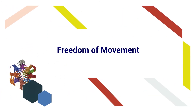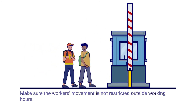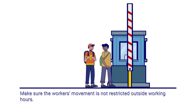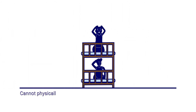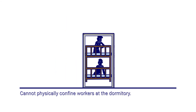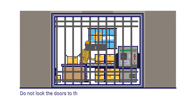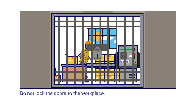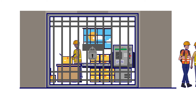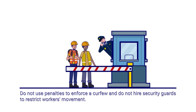Freedom of movement. If accommodation is provided, make sure the workers' movement is not restricted outside working hours. Any form of coercion shall not be used to physically confine workers at the dormitory. Do not lock the doors to the workplace during work hours or dorms to prevent workers from leaving. Do not use penalties to enforce a curfew and do not hire security guards to restrict workers' movement.